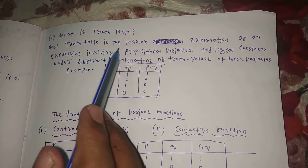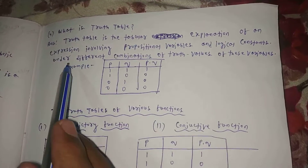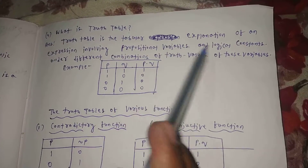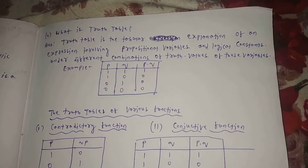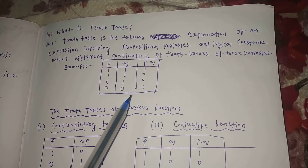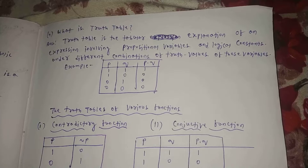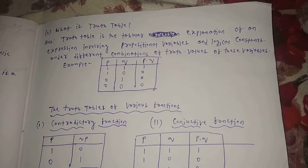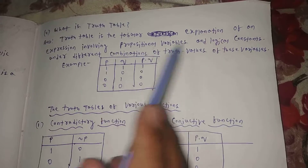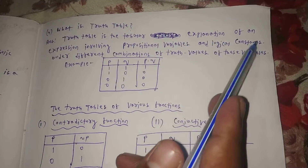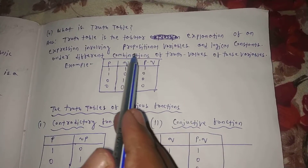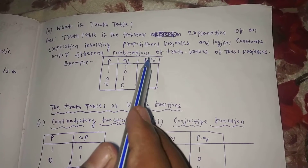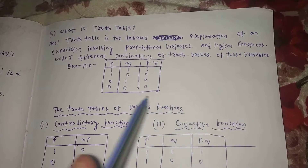What is a truth table? A truth table is the tabular explanation of an expression involving propositional variables and logical constants under different combinations of truth values of these variables.